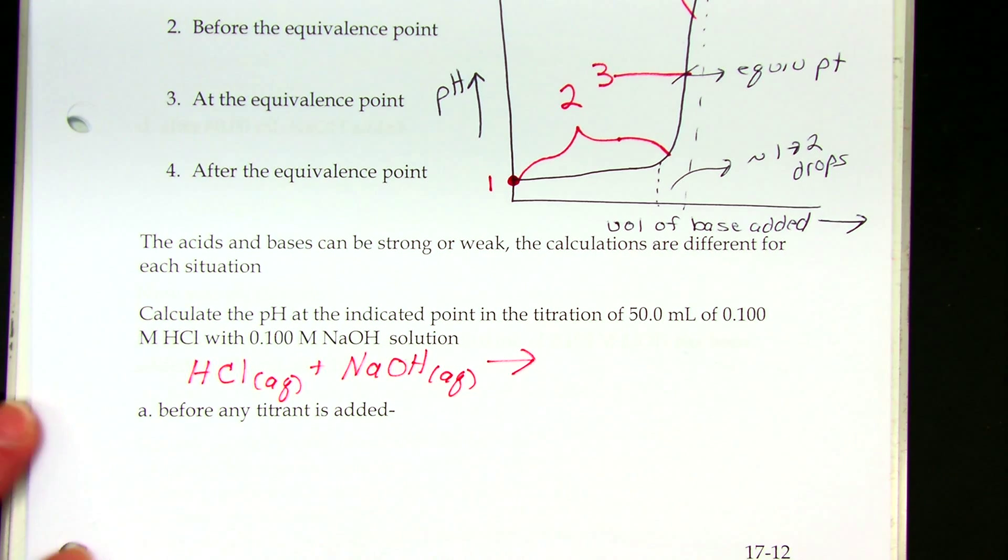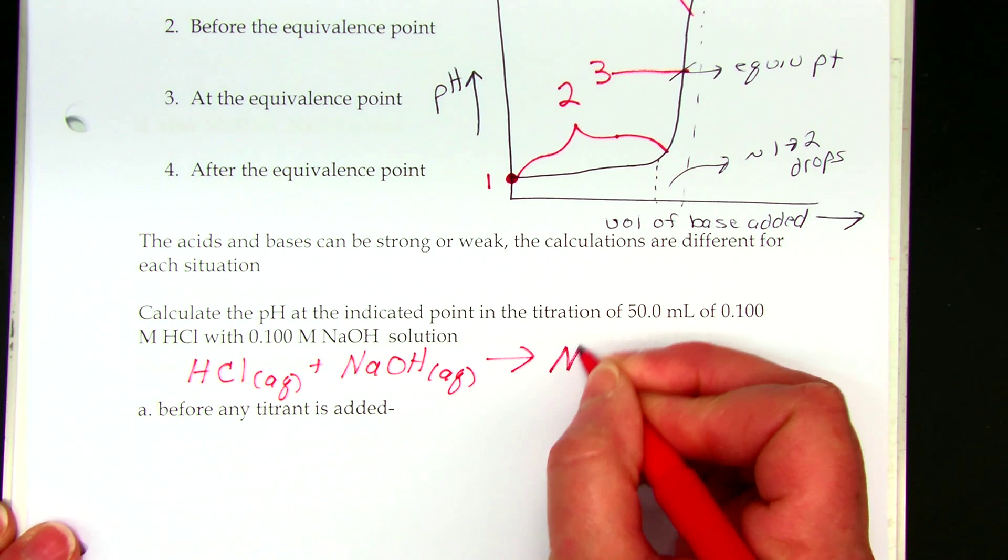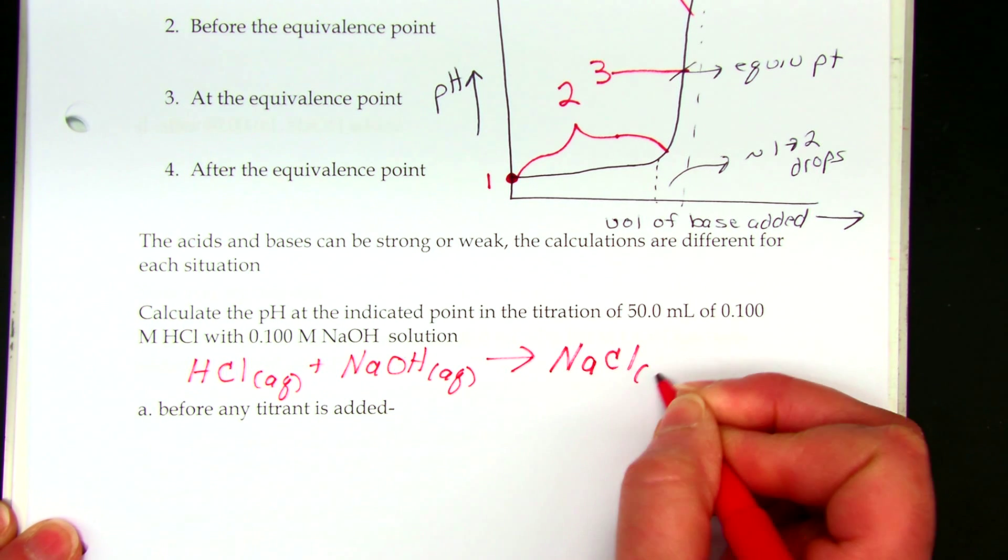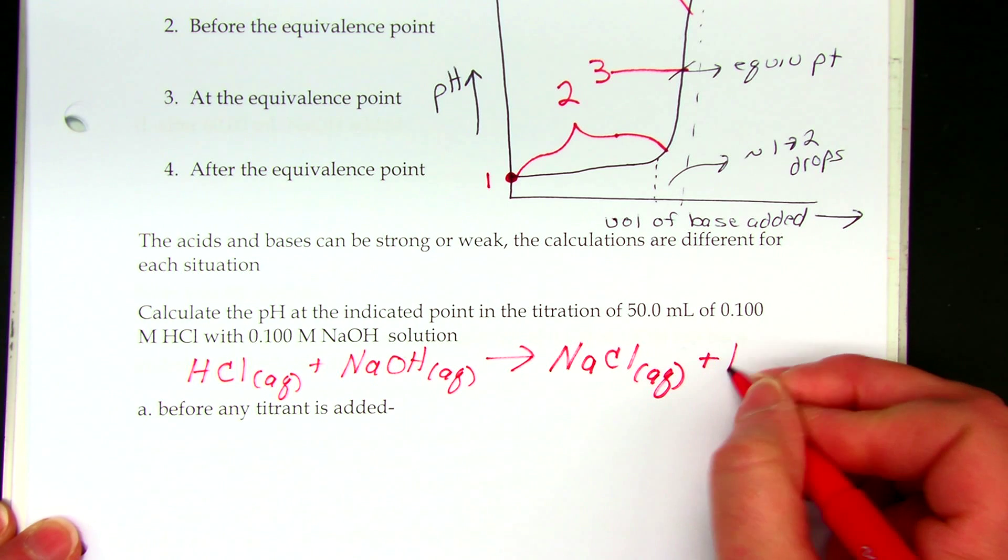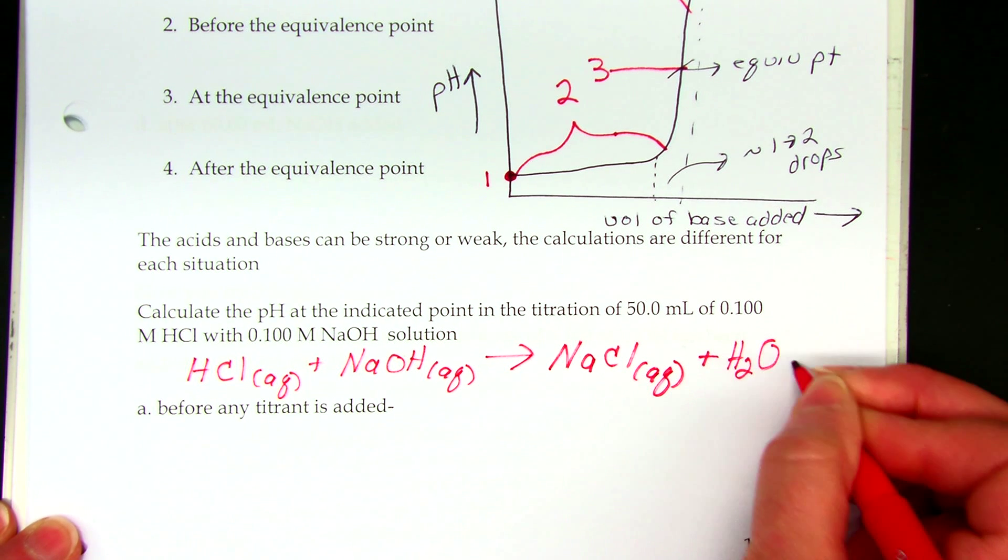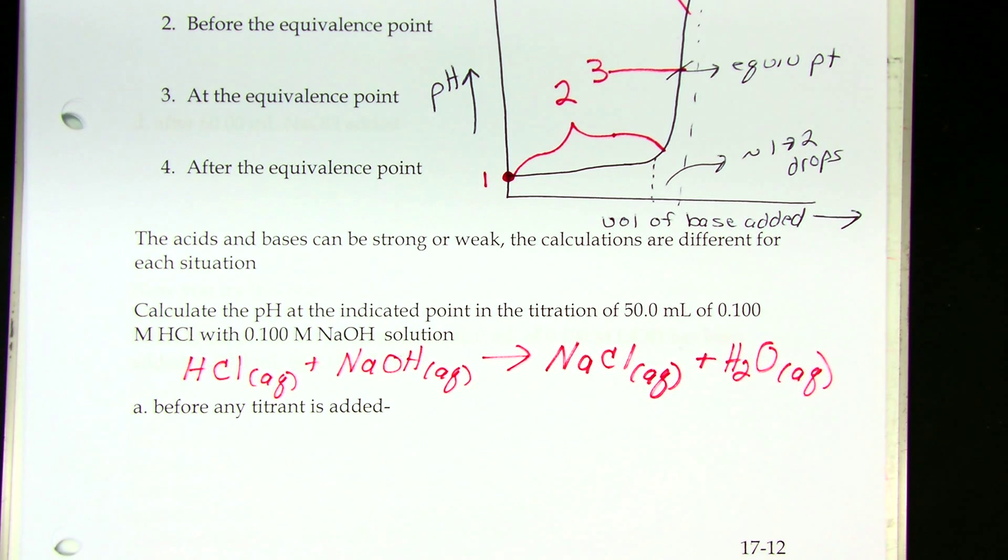This is double replacement chemistry or acid-base chemistry. They trade partners at the dance. So sodium hooks up with chloride, makes sodium chloride, and hydrogen hooks up with hydroxide and makes water. So acid plus base makes salt plus water, always.